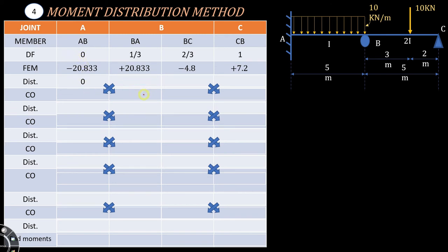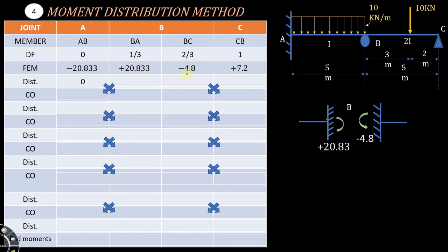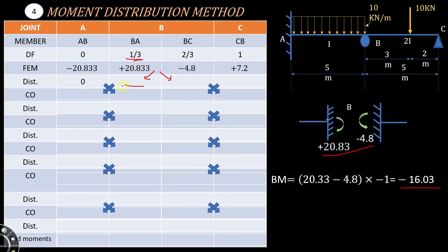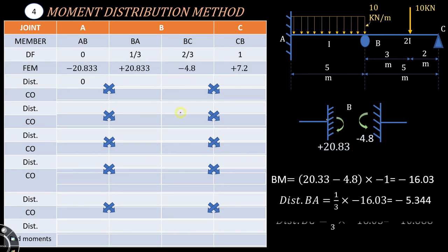To obtain the distributed moments at B, we multiply the balancing moment by the respective distribution factors. Multiplying by DFBA gives the distributed moment for BA, and multiplying by DFBC gives the distributed moment for BC. The distributed moment BA comes out to be minus 5.344, and the distributed moment BC comes out to be minus 10.688.